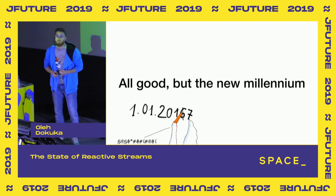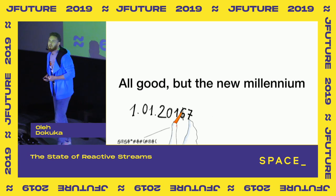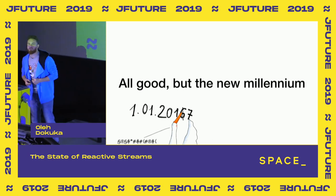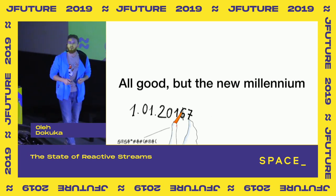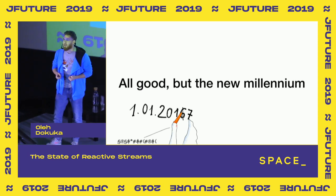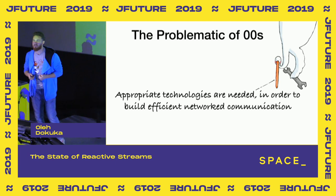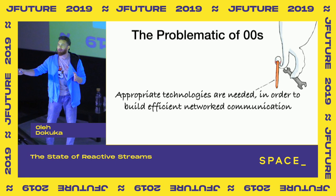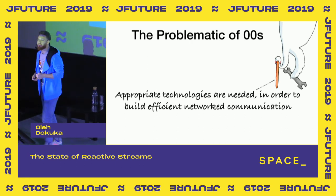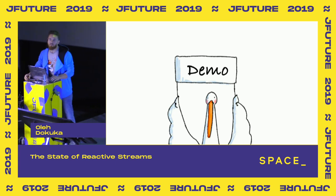Then we moved into the new millennium. What appeared in the 2000s? We started building distributed systems. And the problem of this period was that in order to build an efficient distributed system — a system communicating over the wire, over the network — we had to use a proper set of technologies.